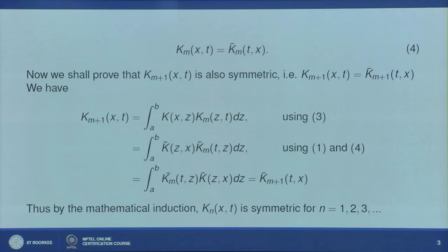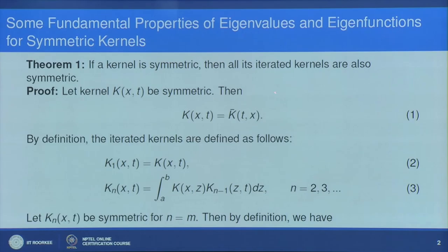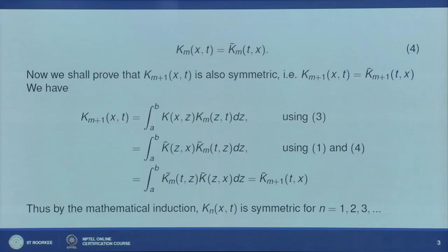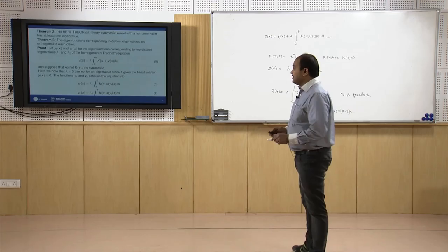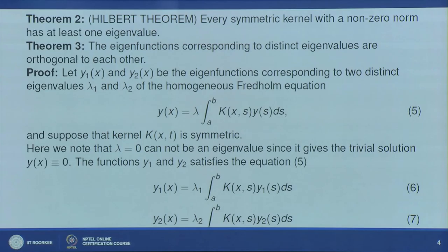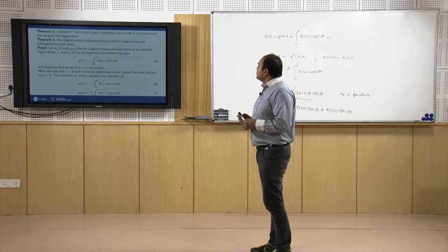Since it is true for n = 1 and for n = m implies n = m+1, by mathematical induction we have proved that if a kernel is symmetric then all its iterated kernels are also symmetric. We will utilize this result later.